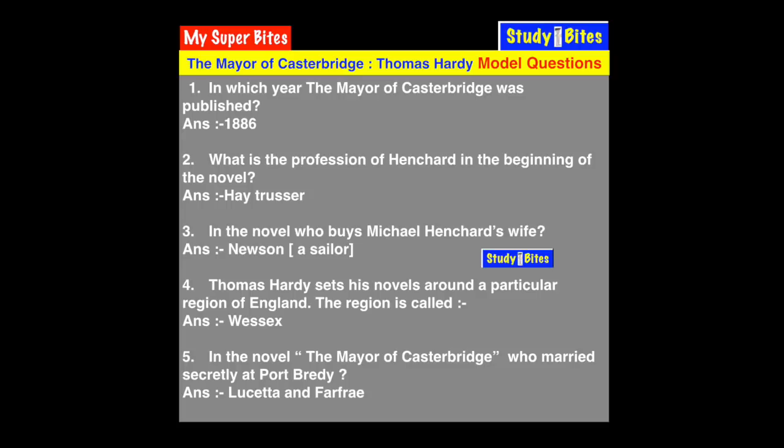Question 4: Thomas Hardy sets his novels around a particular region of England. This region is called Wessex. His collection of novels is known as the Wessex novels, and his poetry collection is also called Wessex Poems. Most of his novels are set in this countryside region.